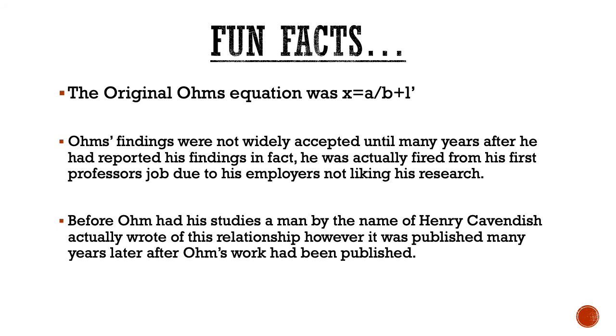We're going to end this slideshow with a few fun facts about Ohm's law. The actual first equation discovered by George Ohm was x equals a over b plus I prime, and there were several different equations that came from this before the modern version that's actually a lot more simple. The second fun fact is Ohm's findings were not accepted at first until many years after he had published his findings. He was actually fired from his professor's job for these research findings because they didn't agree with them, but luckily he found a job shortly after.